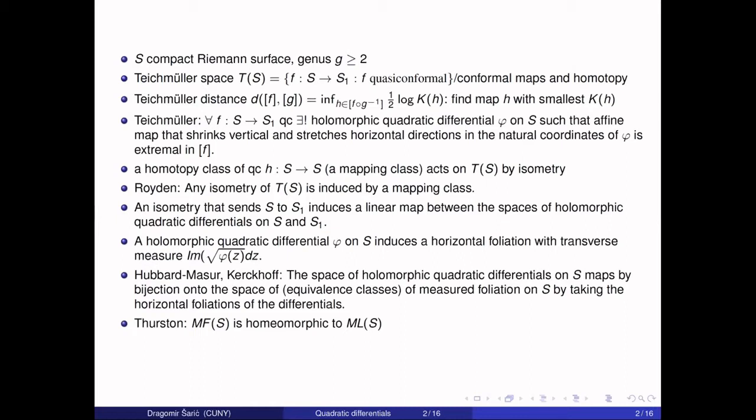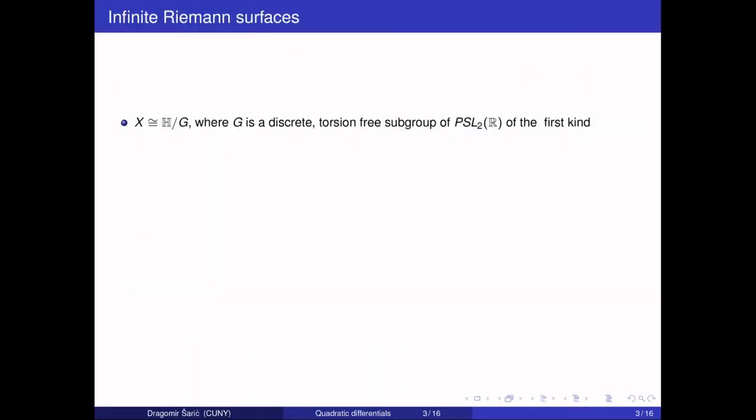Thurston proved that the space of measured foliations on the Riemann surface S is homeomorphic to the space of measured laminations on S, where measured lamination means with respect to the hyperbolic metric. The support of a measured lamination is a geodesic lamination—geodesics with a transverse measure. I like to think of this theorem as saying that to any holomorphic differential there is a unique measured lamination associated, by straightening the horizontal foliation into a geodesic lamination. Even though the foliation covers the whole surface, the geodesic lamination will cover just part of it. Conversely, if you take any measured lamination, there is a holomorphic quadratic differential which realizes those measured laminations by foliation.